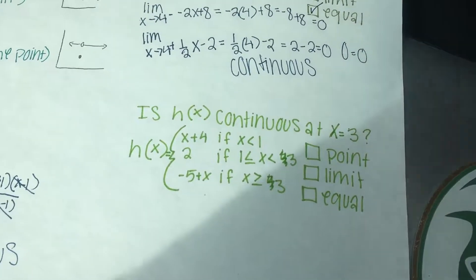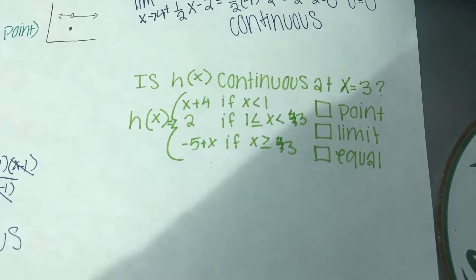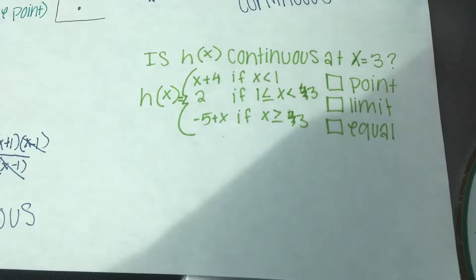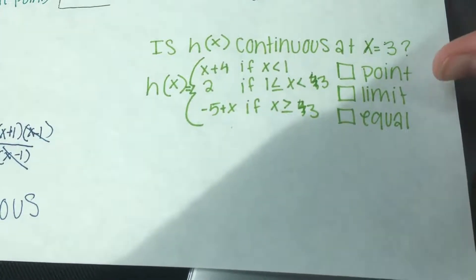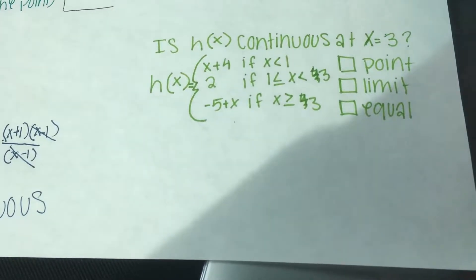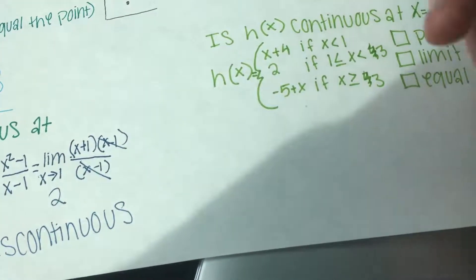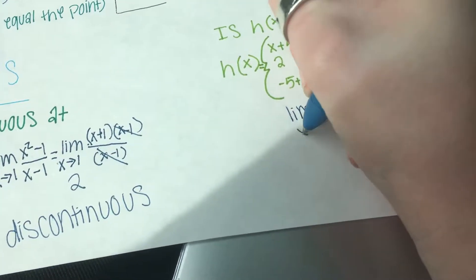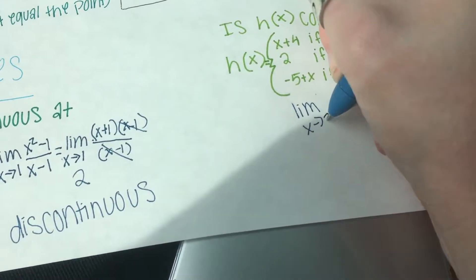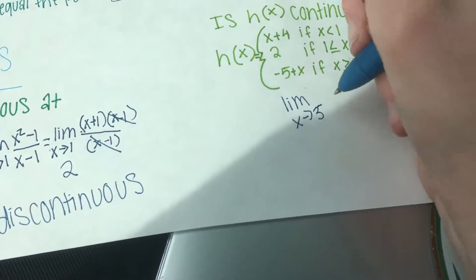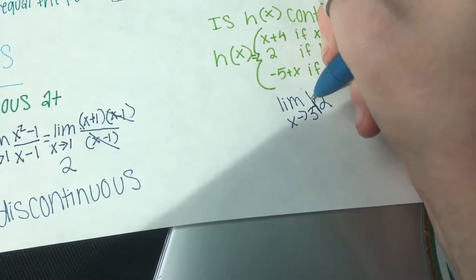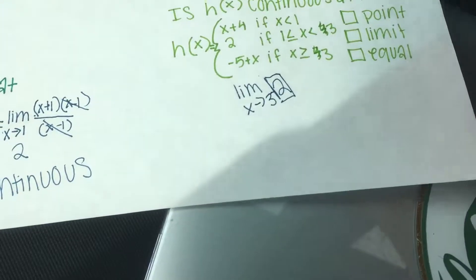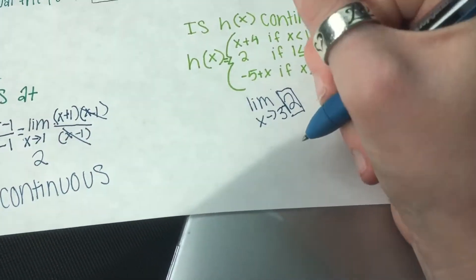So now let's look at our last example: is h(x) continuous at x equals 3? So we need to solve. If we're looking from the left, we put the limit as x approaches 3 from the left. Well, that's just 2, so that's our final answer, 2.